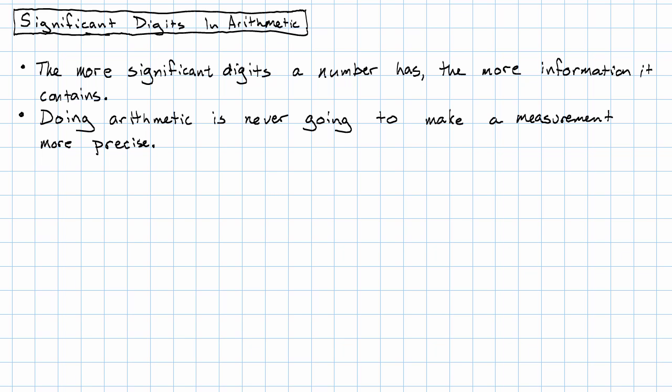So when we're thinking about how to round, we want to round so that we don't pretend that we have more information than we really do. With that in mind, we have rounding rules based on significant digits.